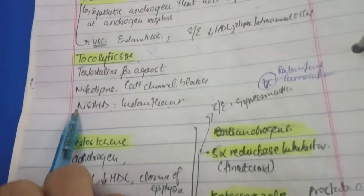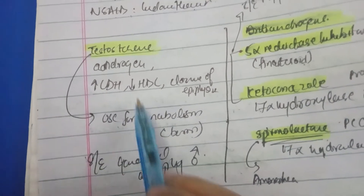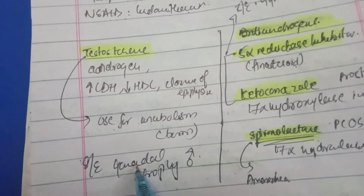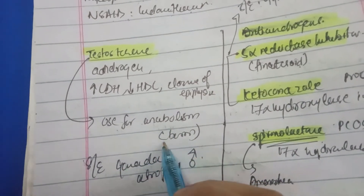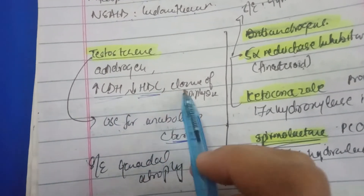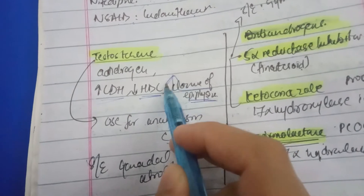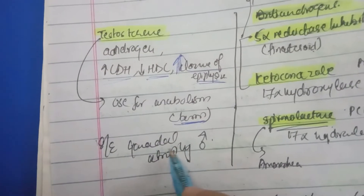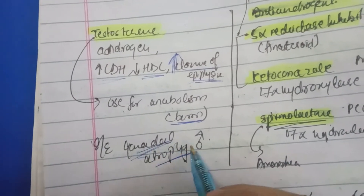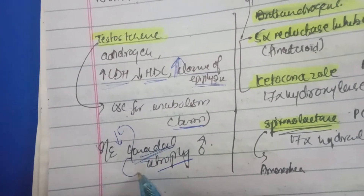Testosterone is used mainly for anabolism — for example, in severe burns. It is tested in doping tests as people use it to increase muscle mass. As an androgen, it increases LDL, decreases HDL, and causes closure of epiphyses if used in young age. Exogenous testosterone downregulates FSH and LH, leading to gonadal atrophy.